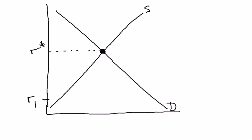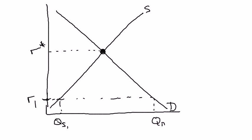At r1, if I want to find quantity supplied, I simply go from the real interest rate over to the supply curve and down — we'll call that quantity supplied 1. Now if I want to find quantity demanded, I go from the real interest rate over to the demand curve and down — we'll call that quantity demanded 1.